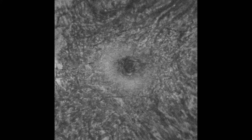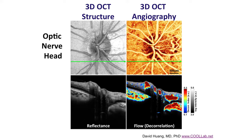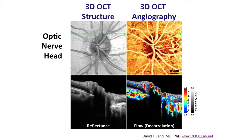OCT is being used to image not only structures but also function. My research team has recently developed new ways of using OCT to perform angiography and blood flow measurements. In contrast to conventional angiography, OCT angiography does not require injection of a contrast agent and is inherently three-dimensional.